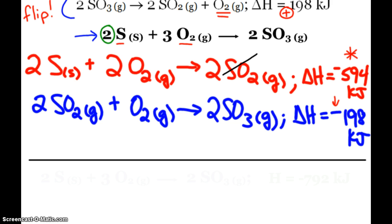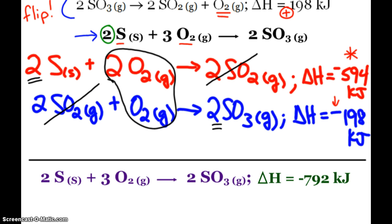And now when I go ahead and add these two reactions up, the sulfur dioxides cancel out. I end up with two sulfurs, two plus one, that's three oxygens, so that's good. And then my two sulfur trioxides, so that is exactly what I was looking for. And then by adding the two delta H's, I find the overall enthalpy change for this reaction using the data given.